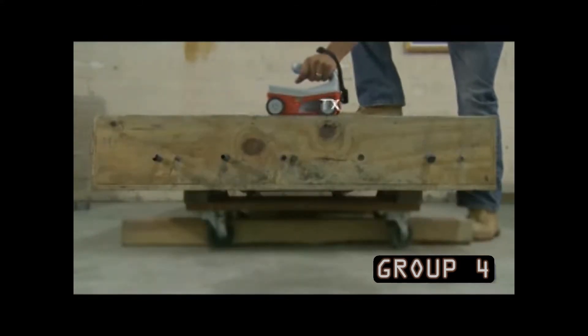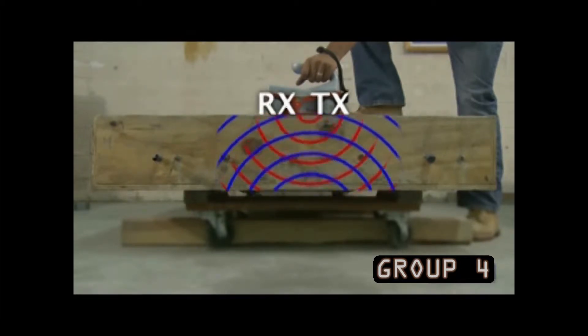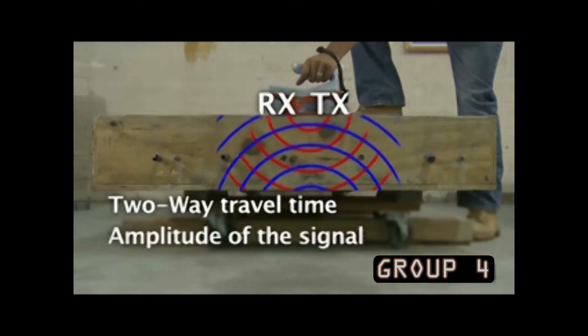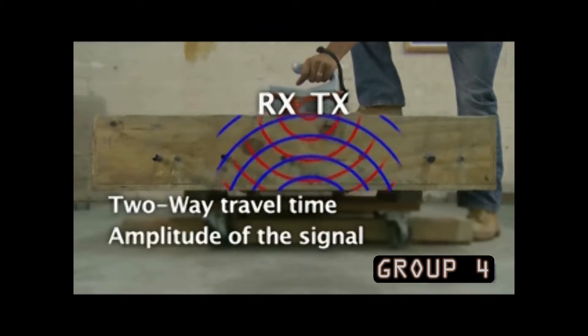The antenna has a transmitter and a receiver. When the signals are returned to the antenna, we record a two-way travel time and the amplitude of the signal. The amplitude is simply the strength of the signal coming back.